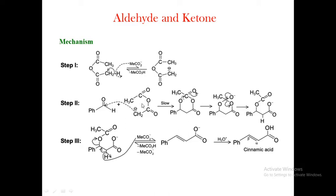In another step, the protonation of carbanion B using acetic acid gives intermediate C, which further loses a water molecule to give the alpha-beta unsaturated mixed anhydride. In the last step, acid hydrolysis of the mixed anhydride forms our target compound, cinnamic acid. This completes the mechanism of the Perkin reaction.